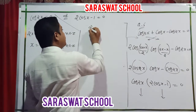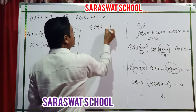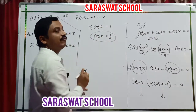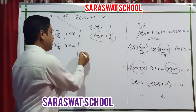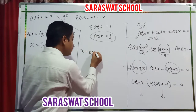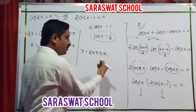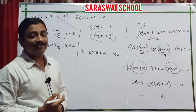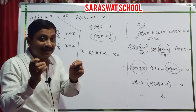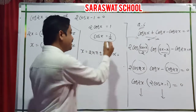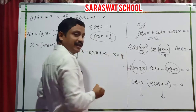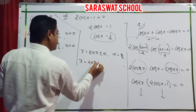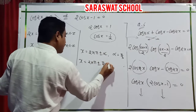For cos x equals half: the solution is x equals 2n pi plus or minus alpha. Cos is half at 60 degrees — pi by 3 — in the first quadrant. So x equals 2n pi plus or minus pi by 3, where n belongs to Z.